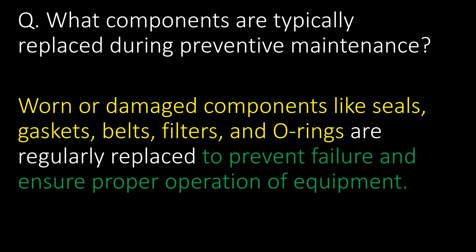What components are typically replaced during preventive maintenance? Worn or damaged components like seals, gaskets, belts, filters, and O-rings are regularly replaced to prevent failure and ensure proper operation of equipment.